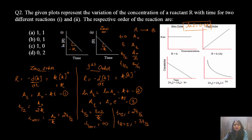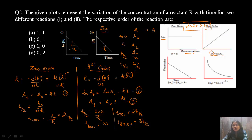Looking at the graphs: for zero order, rate of reaction is independent of concentration — it remains constant. For first order, rate increases linearly with concentration. For concentration vs time: zero order gives a linear decrease, while first order gives an exponential decrease (e^(−Kt)). So our correct answer is option C.